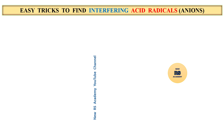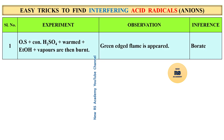Next, easy way to find interfering acid radicals. Before, we discussed nine tests for simple acid radicals. Now we will discuss interfering acid radicals. The first test: original solution plus concentrated sulfuric acid, warmed, then add ethyl acetate and the vapors are burned. If a green-edged flame appears, that is borate.